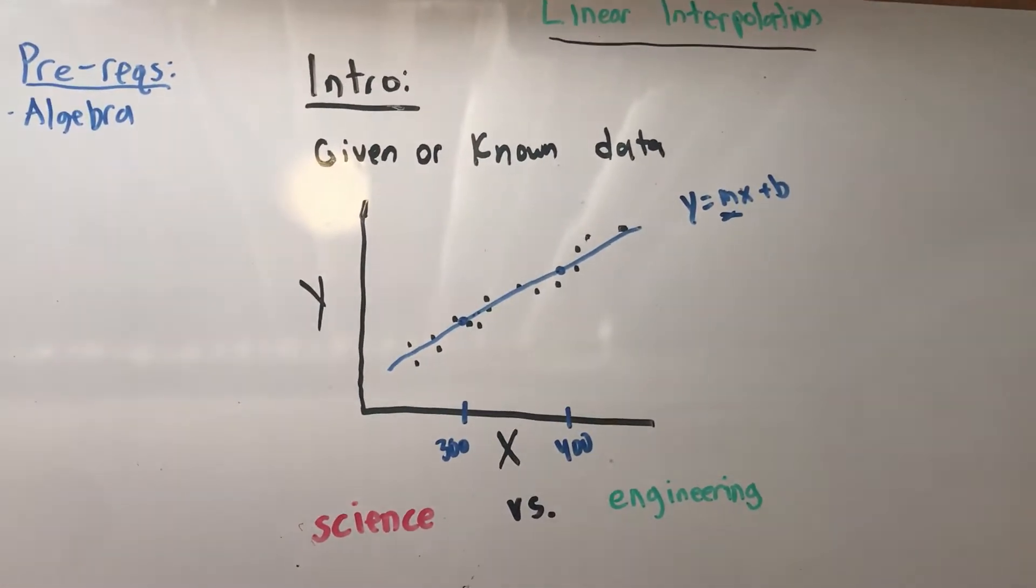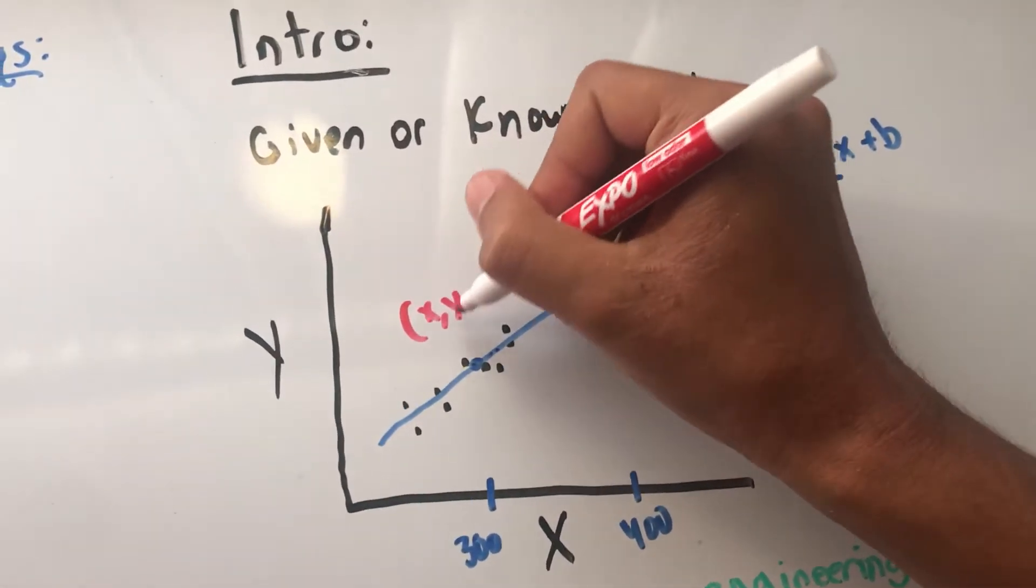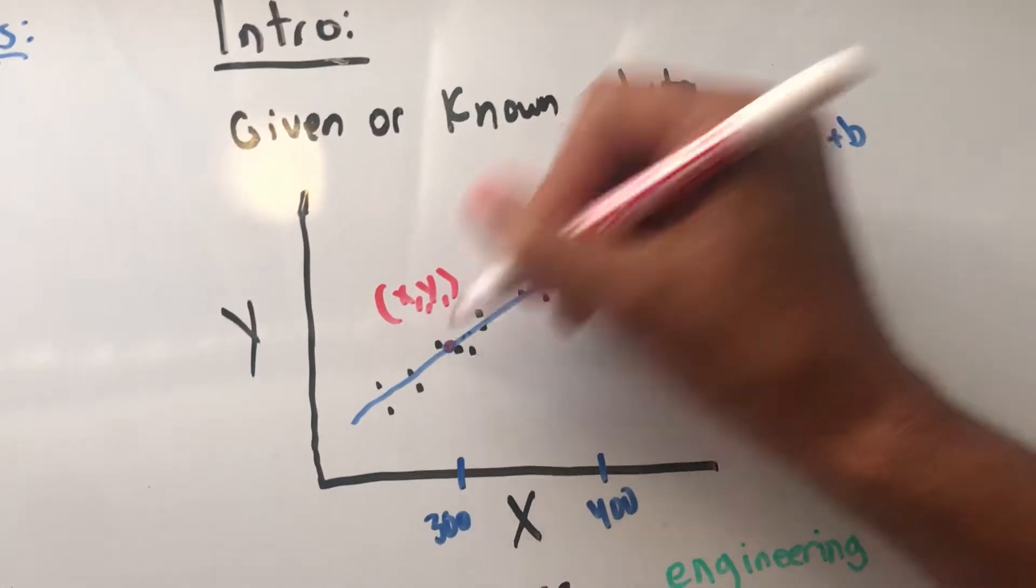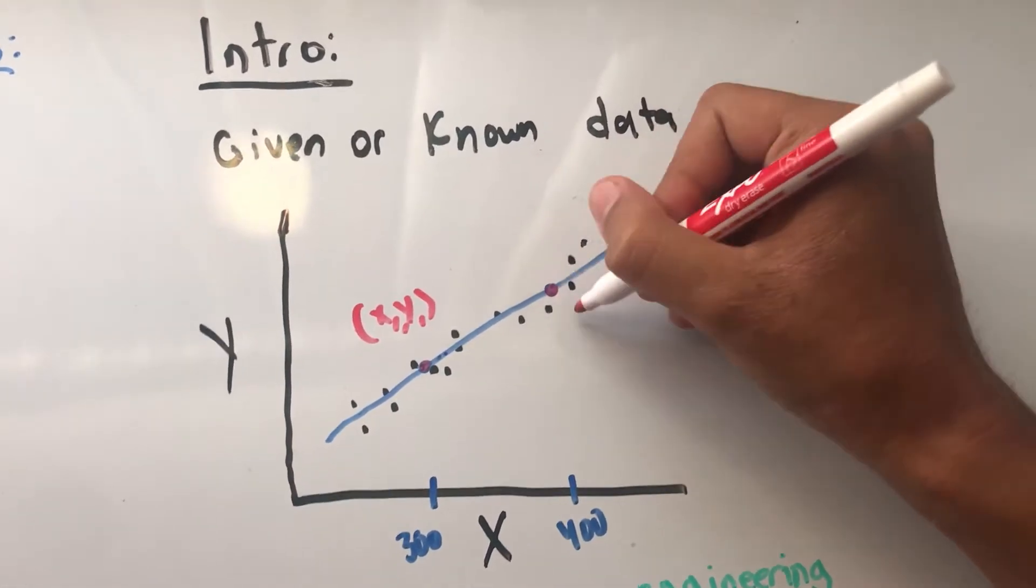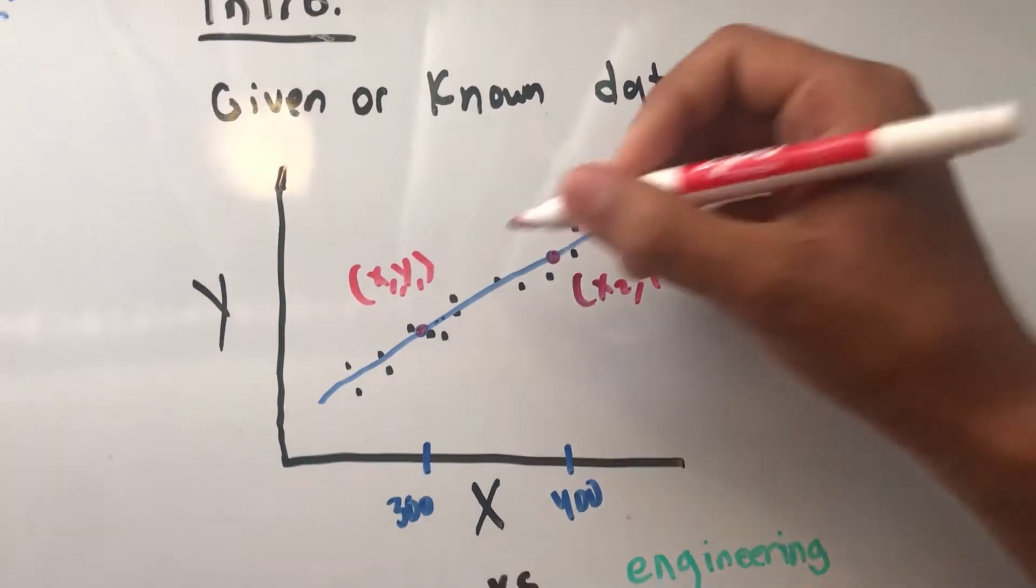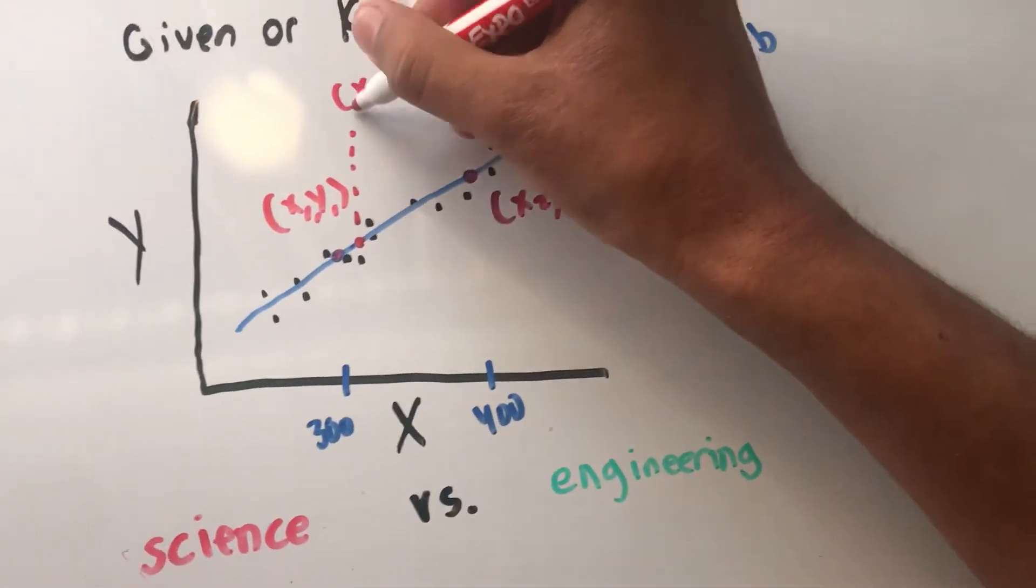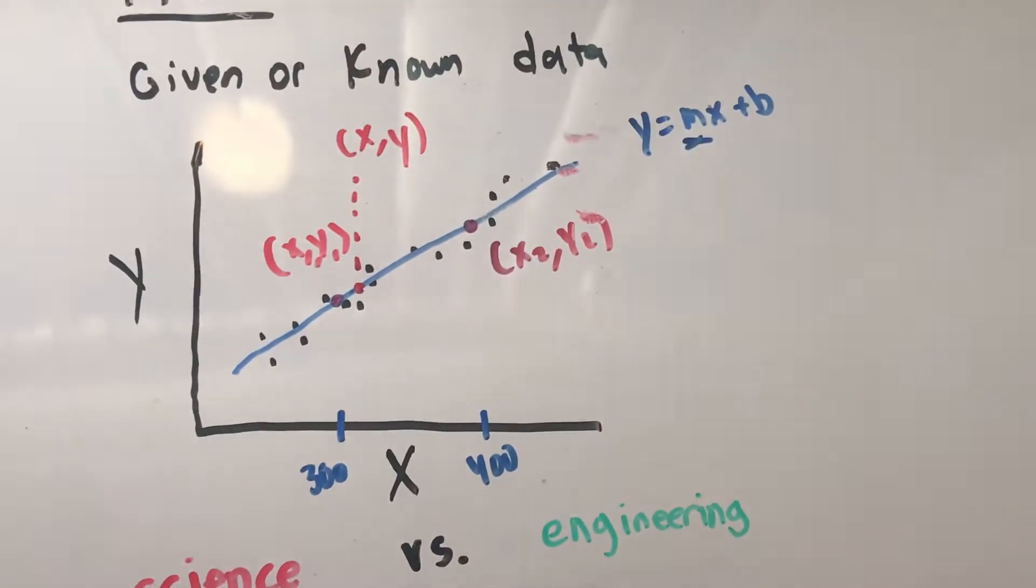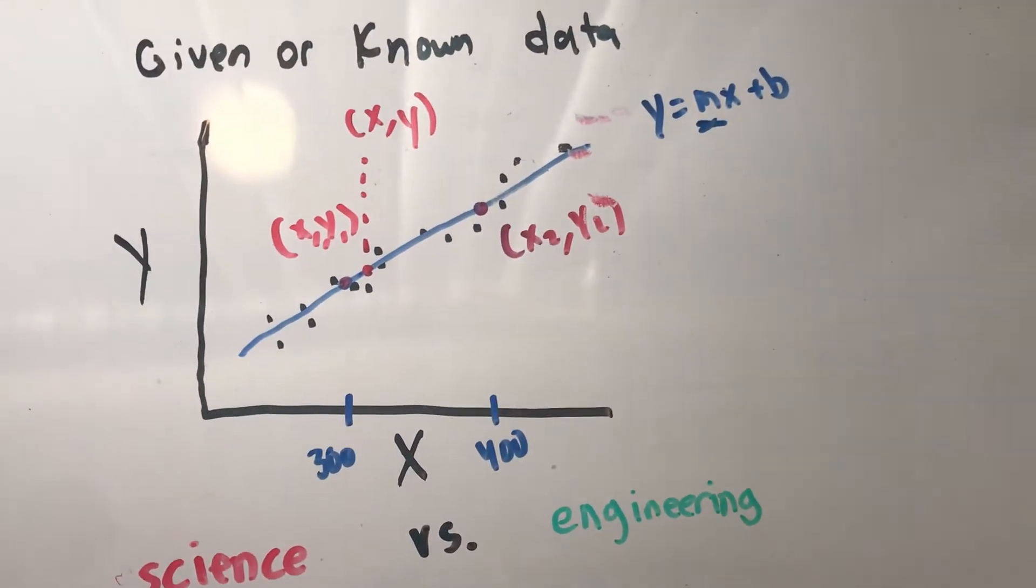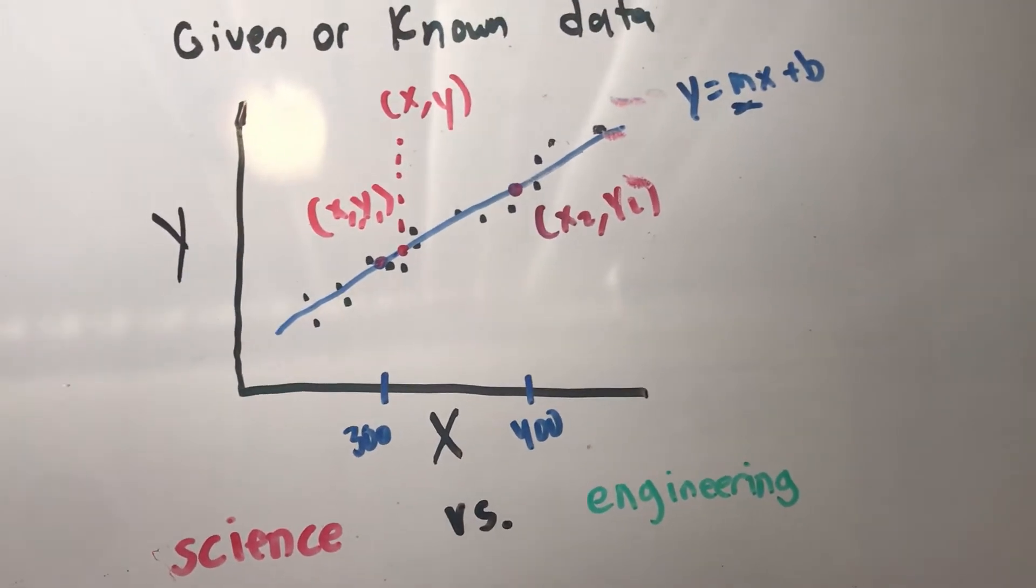Let's pick some data points. Let's say this is x1, y1 right here, and this is x2, y2. Our interpolated point that we want to find out is going to be x, which is unknown, and y, which is unknown.